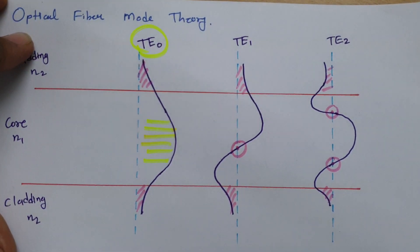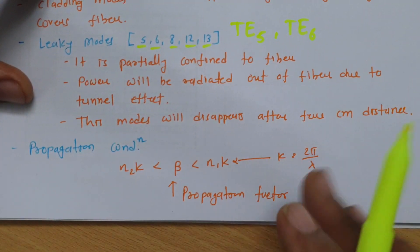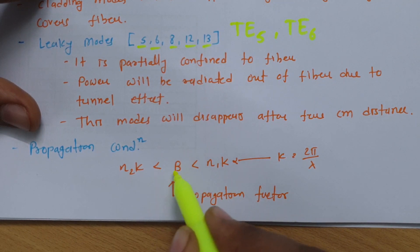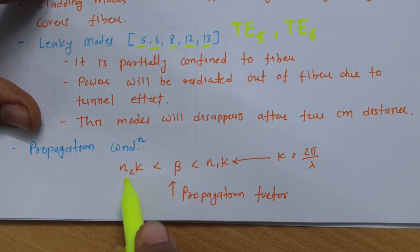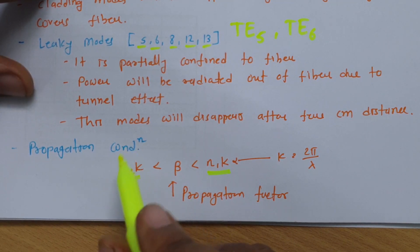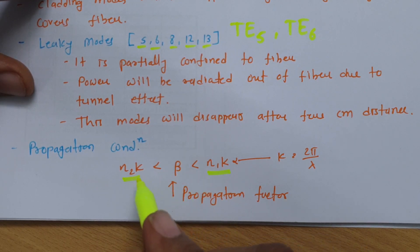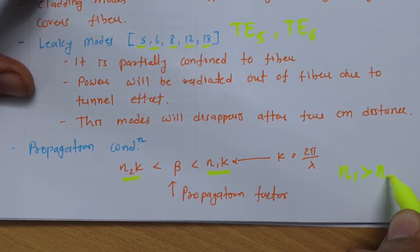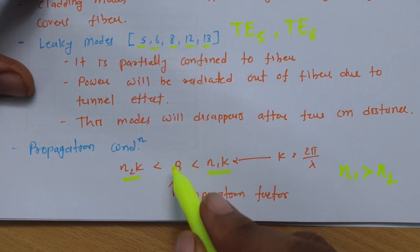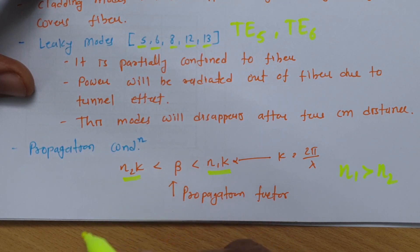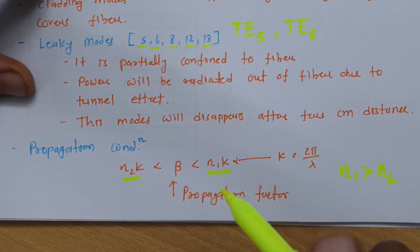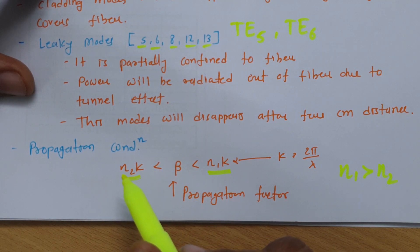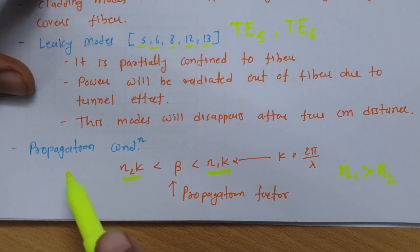Now, what is the condition of propagation? The condition is based on the propagation factor beta. For propagation to occur, beta must lie between n2·k and n1·k, where k = 2π/λ. Since n1 is greater than n2, if the propagation factor is lower than n2·k, propagation will not happen. Beta must be between n2·k and n1·k for valid propagation.